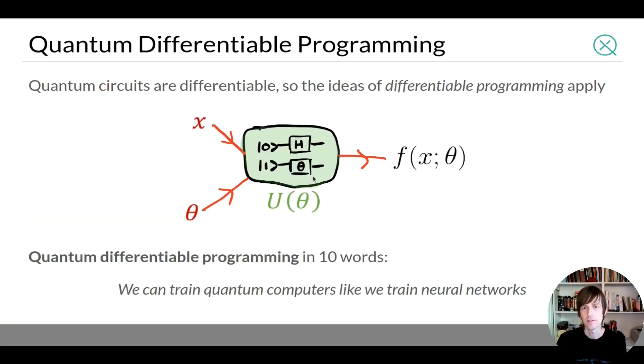So this allows us to start thinking about quantum differentiable programming. As I said on the previous slide, the Born rule is just a linear algebraic expression. So it's differentiable, which means that all the ideas of differentiable programming that we should be able to train an object using gradient descent, all this applies to quantum circuits that are parameterized unitaries. So we have a circuit and it spits out some function which depends continuously on parameters theta. And we should be able to train that function just like we would train a neural network.